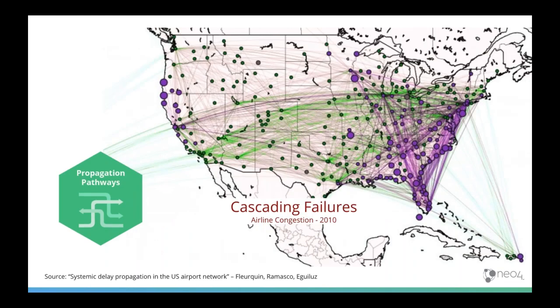Here's a real-world example: a visualisation showing delay propagation in a US transport network. This is good for analysing propagation paths — understanding the routes taken by network failure. Using a 2010 dataset, the purple dots indicate serious delays and green ones show where things are more OK. In a time sequence you can see cascading, rippling failures spreading from the East Coast to the West Coast. The same approach could apply to containing a virus on an IT network, an electrical grid surge, or spreading information through a social network.